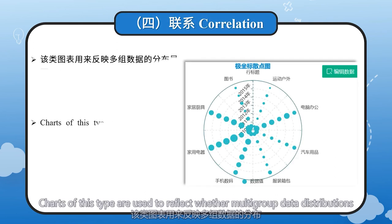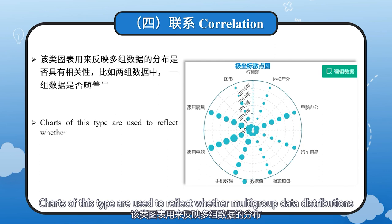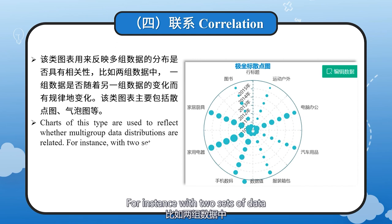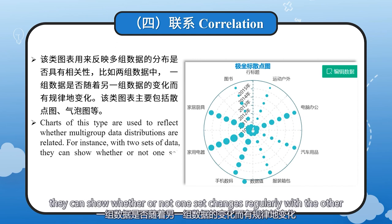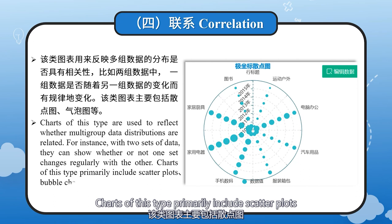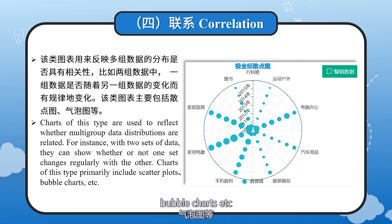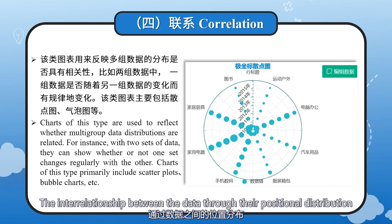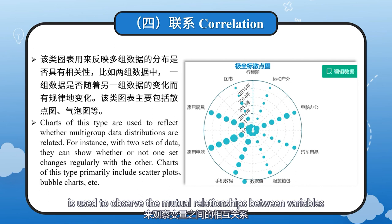Correlation: Charts of this type are used to reflect whether multi-group data distributions are related. For instance, with two sets of data, they can show whether or not one set changes regularly with the other. Charts of this type primarily include scatter plots, bubble charts, etc. Scatter plots and bubble charts are often used to display data distribution, and the interrelationship between the data through their positional distribution is used to observe the mutual relationships between variables.